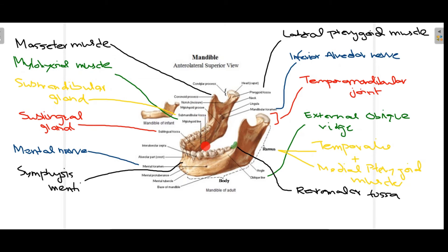Moving anteriorly, we have the submandibular fossa, which holds the submandibular gland — one of the major salivary glands. More anterior to the submandibular fossa is the sublingual fossa, which holds the sublingual gland, also one of the major salivary glands. As discussed before, the alveolar process holds the mandibular teeth, and between the alveolar sockets we have the inter-alveolar septa.